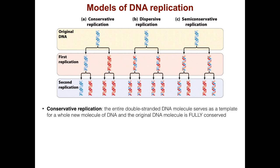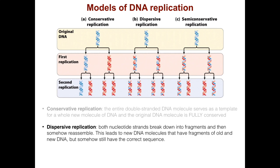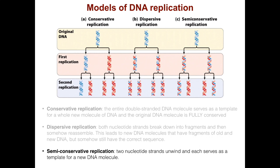One model is conservative replication. In this model, the entire double-stranded DNA molecule serves as a template for a whole new molecule of DNA and the original DNA is fully conserved. Dispersive replication is a very creative and somewhat unlikely model where both nucleotide strands break down into fragments and then somehow reassemble, leading to a new DNA molecule that has fragments of old and new DNA but somehow has the correct sequence.